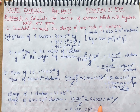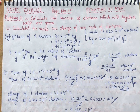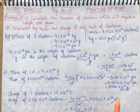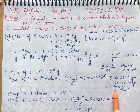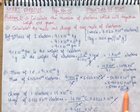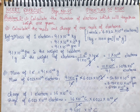So for 1 mole of electrons: the charge is 9.635 into 10 raised to power 4 Coulombs, and the mass is 5.480 into 10 raised to power minus 4 grams.